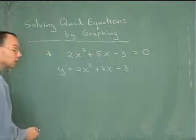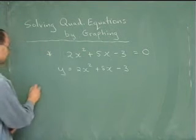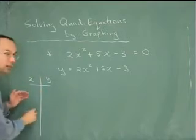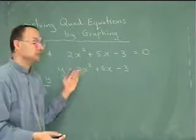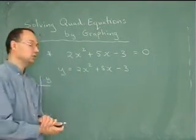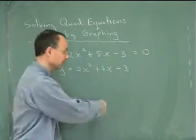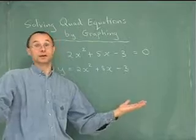The table of values method is simply a matter of plugging in a whole bunch of different x's into this and trying to establish what the y values are, plotting those points, connecting them, and voila, there's your picture.